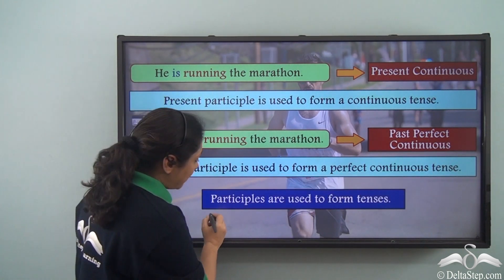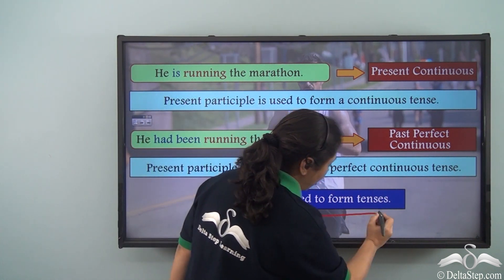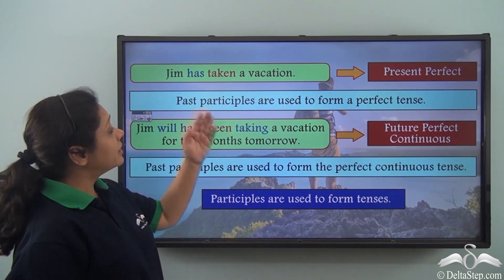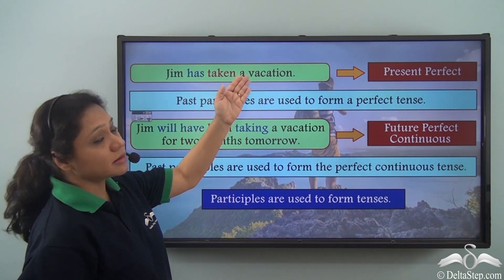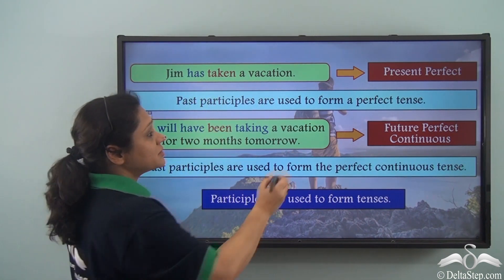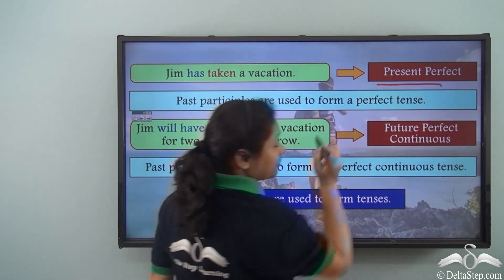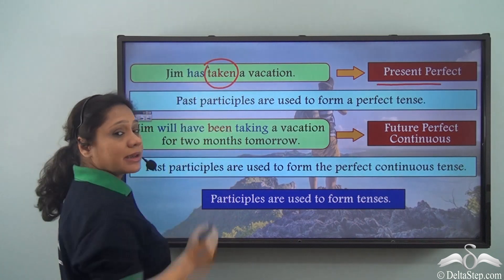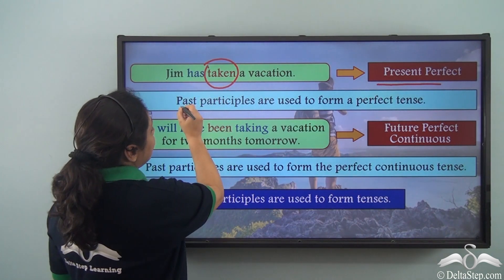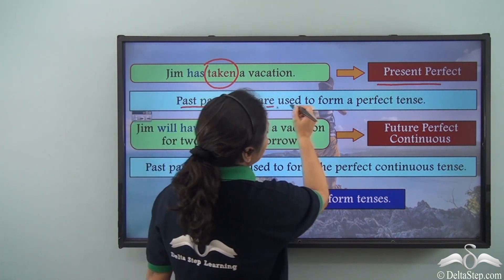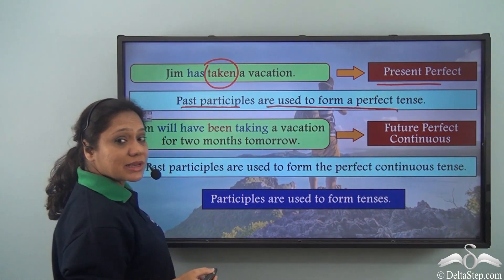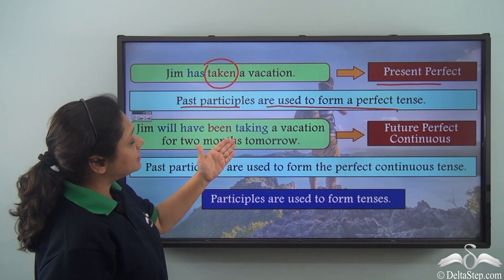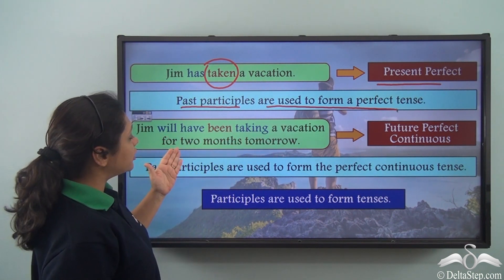So what can we summarize? We can say that participles are used to form tenses. Similarly, if we say 'Jim has taken a vacation,' this sentence portrays the present perfect tense where we have used the past participle 'taken.' So we can say that past participles are used to form a perfect tense.